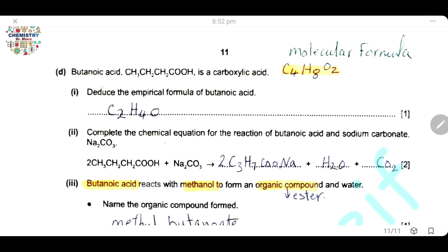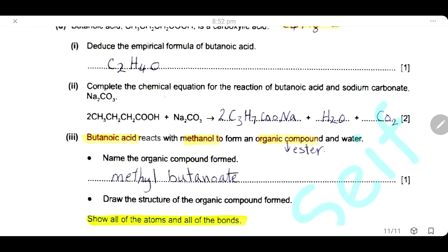Question D. Butanoic acid is a carboxylic acid with molecular formula C₄H₈O₂. Deduce the empirical formula of butanoic acid. The empirical formula is the simplest whole number ratio, so we divide all subscripts by 2 to get C₂H₄O. Complete the chemical equation for the reaction of butanoic acid with sodium carbonate. The products are sodium butanoate, water, and carbon dioxide gas.